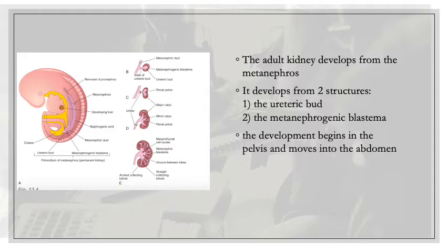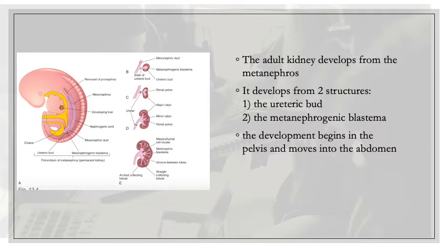The adult kidney — the metanephros — develops from two different structures: the ureteric bud and the metanephrogenic blastema. The ureteric bud is a mass that grows from the mesonephric duct, developing very close to the cloaca. The ureteric bud is going to develop into the ureter, the renal pelvis, the calyces, and the collecting tubules of our adult kidney.